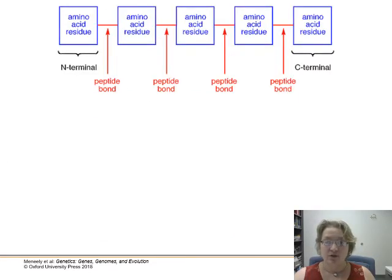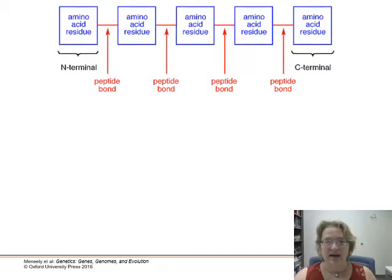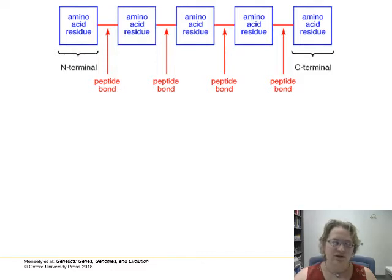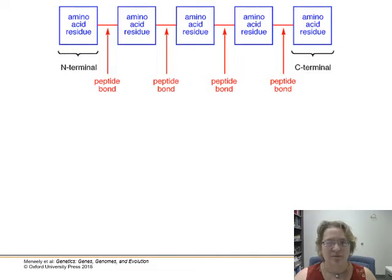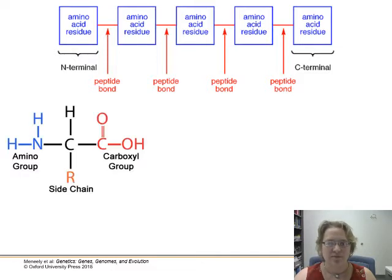So we're going to build an amino acid polymer chain by adding on sequential amino acid residues, and that's going to form peptide bonds in between them. At one end we have our N-terminal and at the other end we have our C-terminal. The N-terminal is kind of our head, analogous to our methyl cap on the messenger RNA.